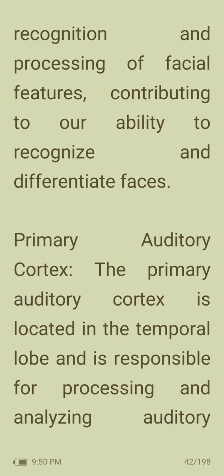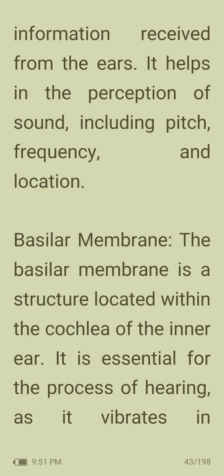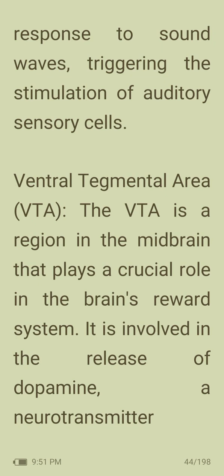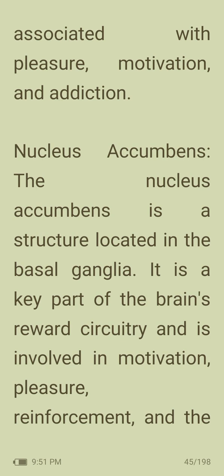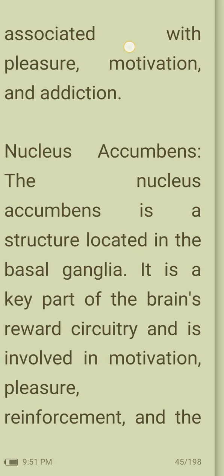Primary auditory cortex: located in the temporal lobe, responsible for processing and analyzing auditory information perceived from the ears, helping in the perception of sound including pitch, frequency, and location. Basilar membrane: a structure within the cochlea of the inner ear, essential for hearing as it vibrates in response to sound waves, triggering stimulation of auditory sensory cells. Ventral tegmental area (VTA): a region in the midbrain crucial to the brain's reward system, involved in the release of dopamine — a neurotransmitter associated with pleasure, motivation, and addiction. Nucleus accumbens: located in the basal ganglia, a key part of the brain's reward circuitry involved in motivation, pleasure, reinforcement, and the experience of reward.